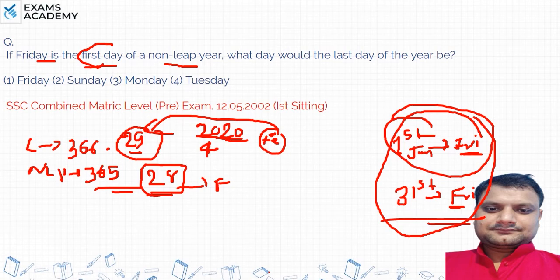So if the first day was Friday, then the last day is also Friday. This is your first option — the correct answer. The first day and the last day of a non-leap year are the same.